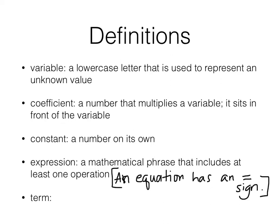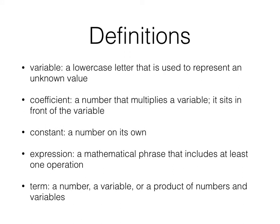And finally, term. A term is a number, a variable, or a product of numbers and variables. So, we're going to look at an example in just a second, and we're going to see what that means with term. So, terms are separated. They're separated by addition and subtraction. Which should make it easier to see in the example in a moment. Terms are separated by addition and subtraction.